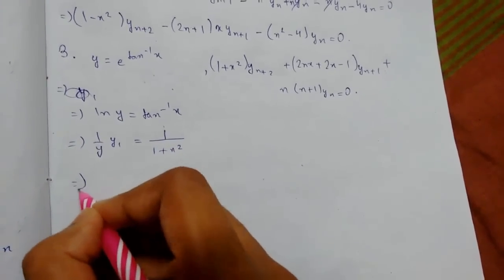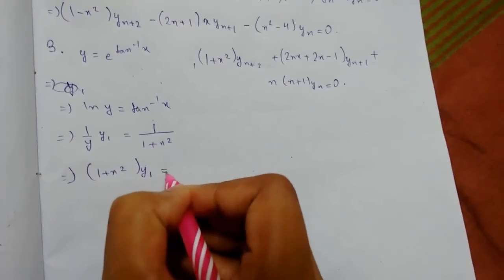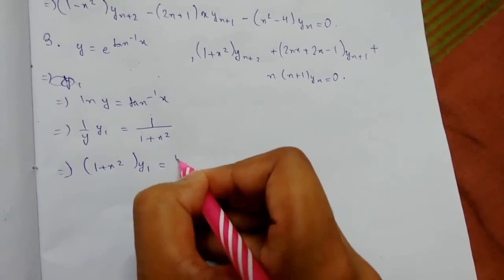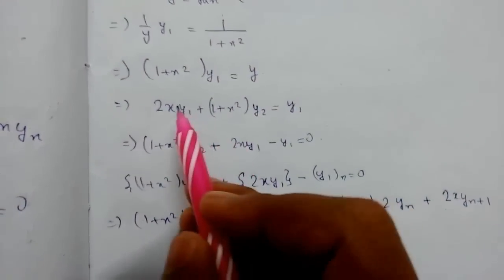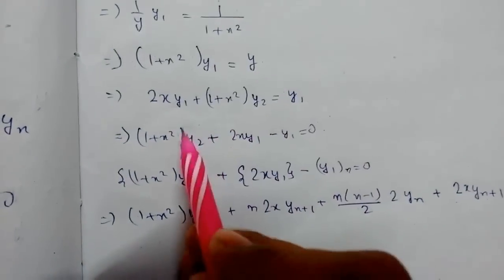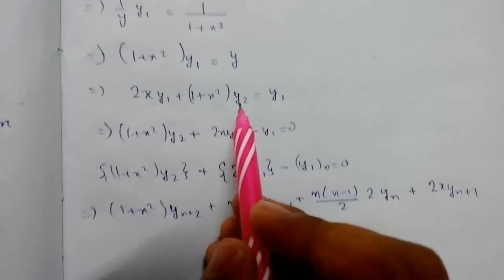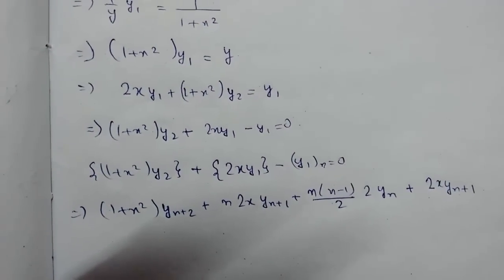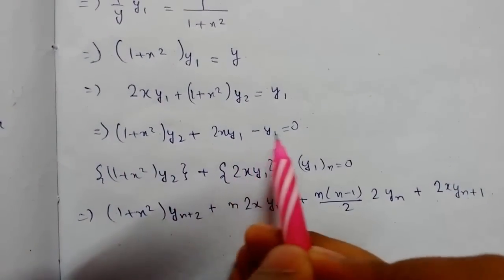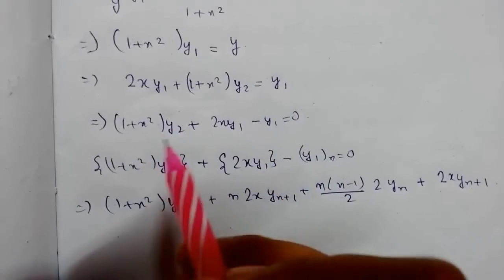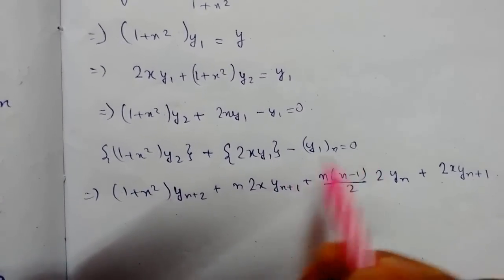Cross-multiplying gives (1+x²)·y₁ = y. Differentiating again: 2x·y₁ + (1+x²)·y₂ = y₁. Rearranging to the left hand side: (1+x²)·y₂ + 2x·y₁ − y₁ = 0, i.e., (1+x²)·y₂ + (2x−1)·y₁ = 0. Now we apply Leibniz's theorem and differentiate n times.